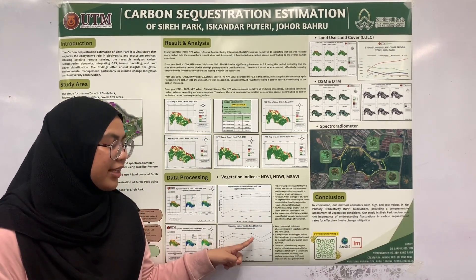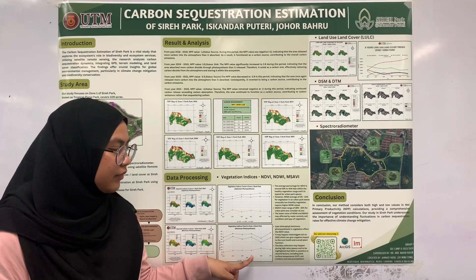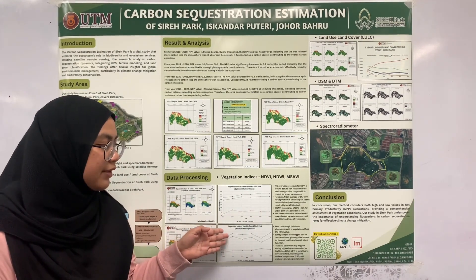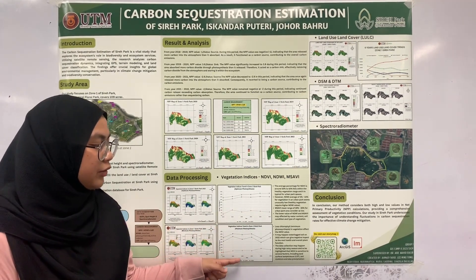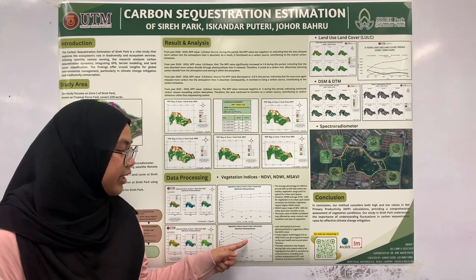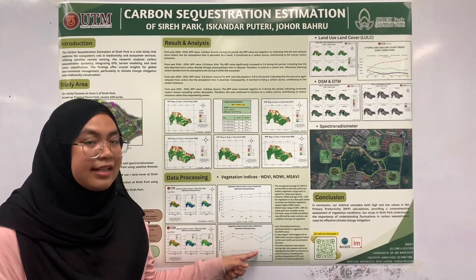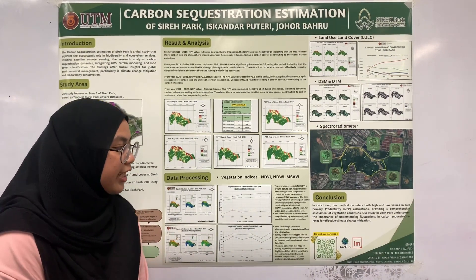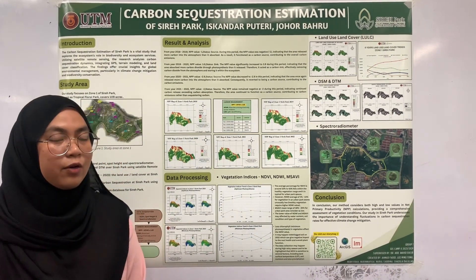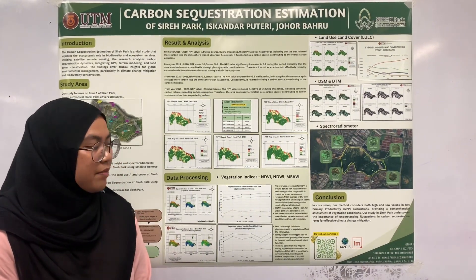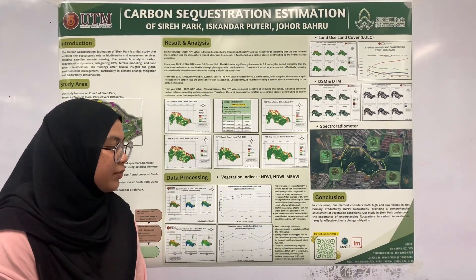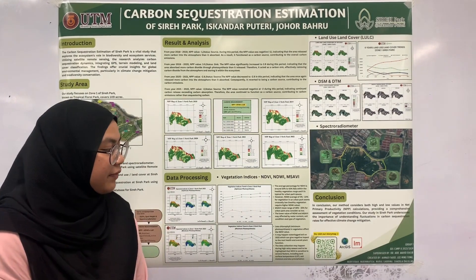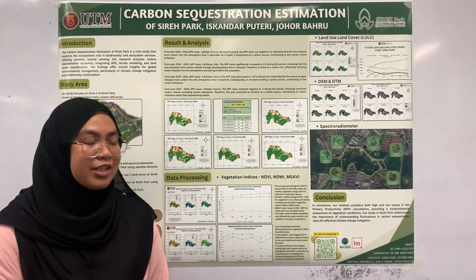This is our vegetation indices trend in Zone 1, Sirih Park, for minimum photosynthesis. During 2022, there is a sudden drop for the NDVI and MESA-V values, with a slight increase in the NDWI value. This may be due to waterlogged soil in 2022, which can negatively impact root health and overall plant function. Data collection may have occurred during high precipitation. It should be noted that NDVI is sensitive to several factors including land surface temperature, soil moisture, and precipitation.